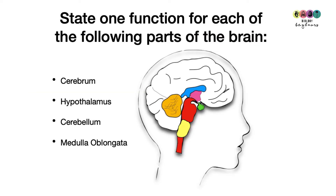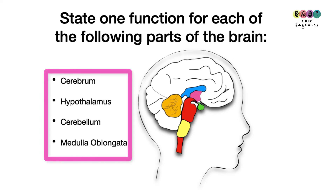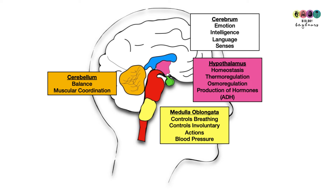Next question: state one function for each of the following parts of the brain — the cerebrum, the hypothalamus, the cerebellum, and the medulla oblongata. The cerebrum controls emotion, intelligence, language, and the senses. The hypothalamus is involved in homeostasis — maintaining constant internal conditions — such as thermoregulation, osmoregulation, and it has an endocrine function producing anti-diuretic hormone. The medulla oblongata controls breathing and other involuntary actions such as blood pressure and sneezing. The cerebellum is responsible for balance and muscular coordination.